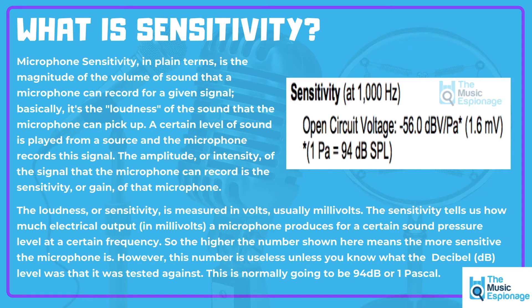A certain level of sound is played from a source and the microphone records this signal. The amplitude or intensity of the signal that the microphone records is the sensitivity or gain of that microphone. The loudness or sensitivity is measured in volts, usually millivolts, and you'll typically see it on the back of or the box of a microphone where it says sensitivity at 1000 hertz.